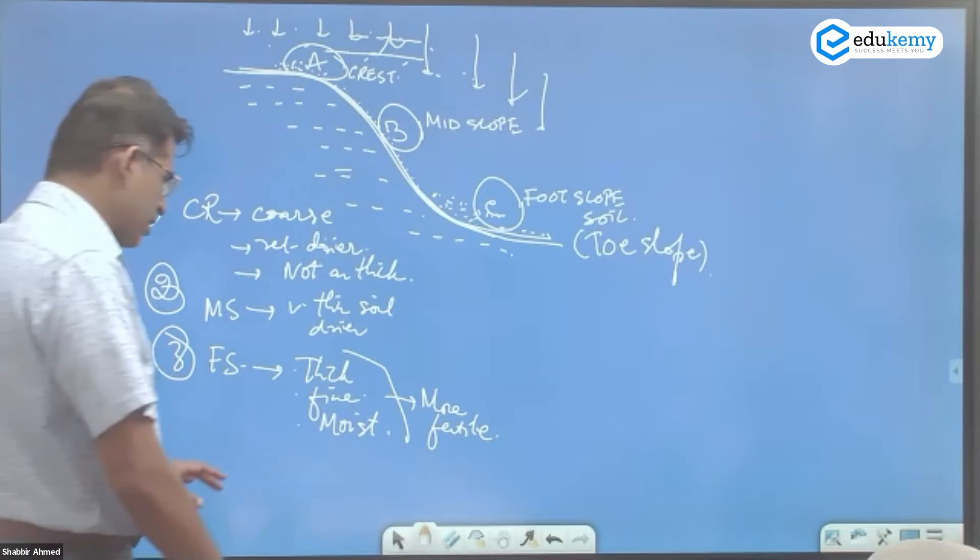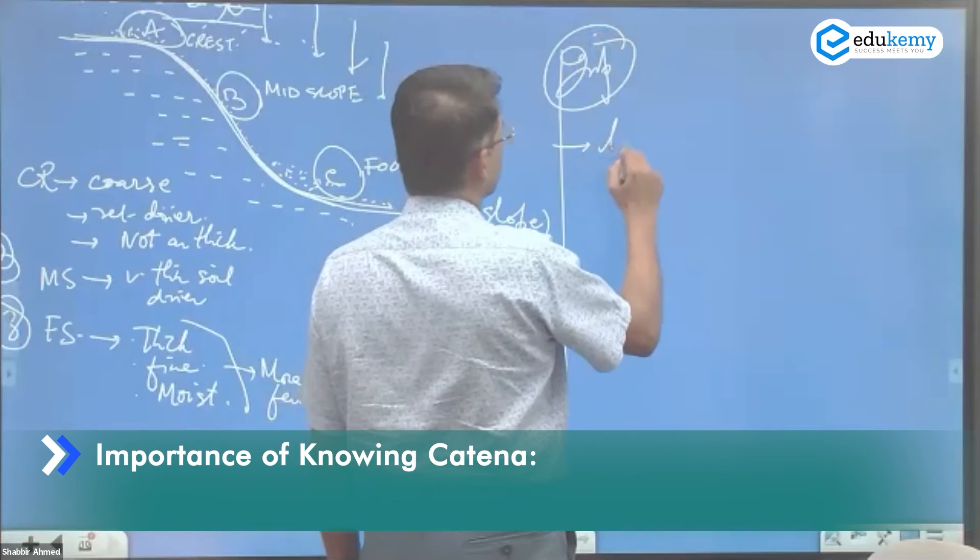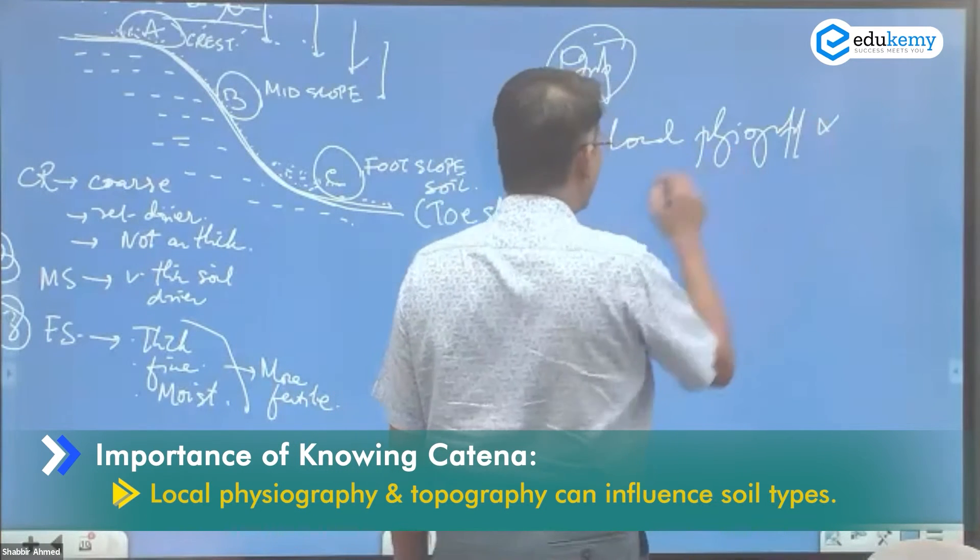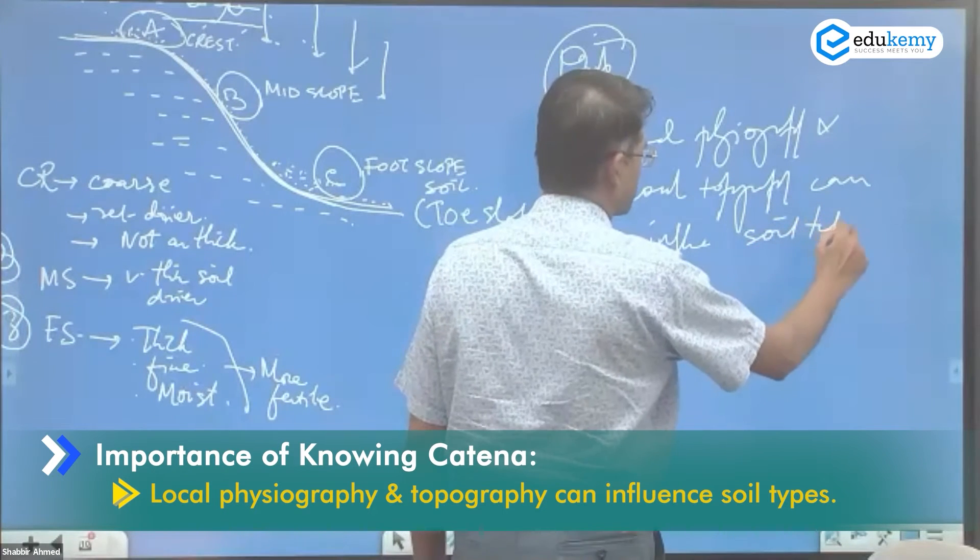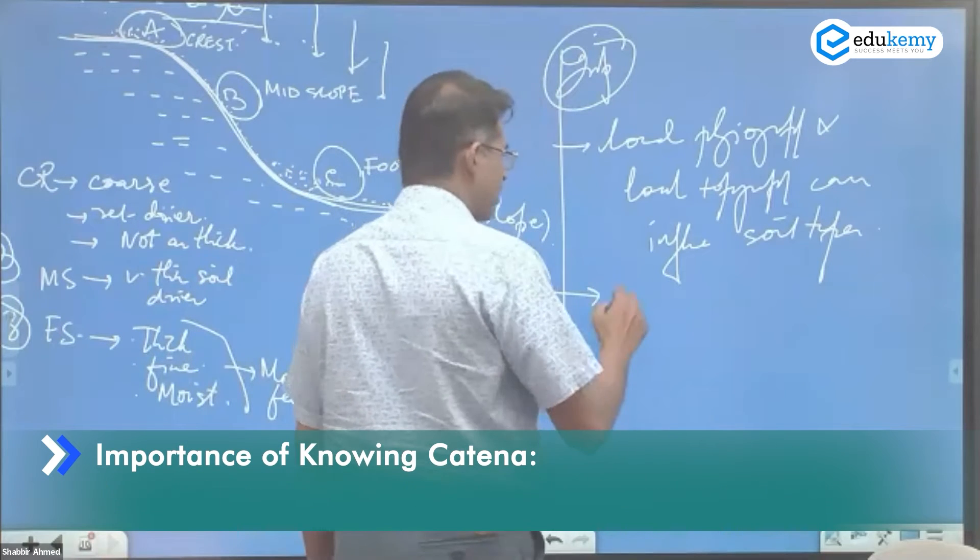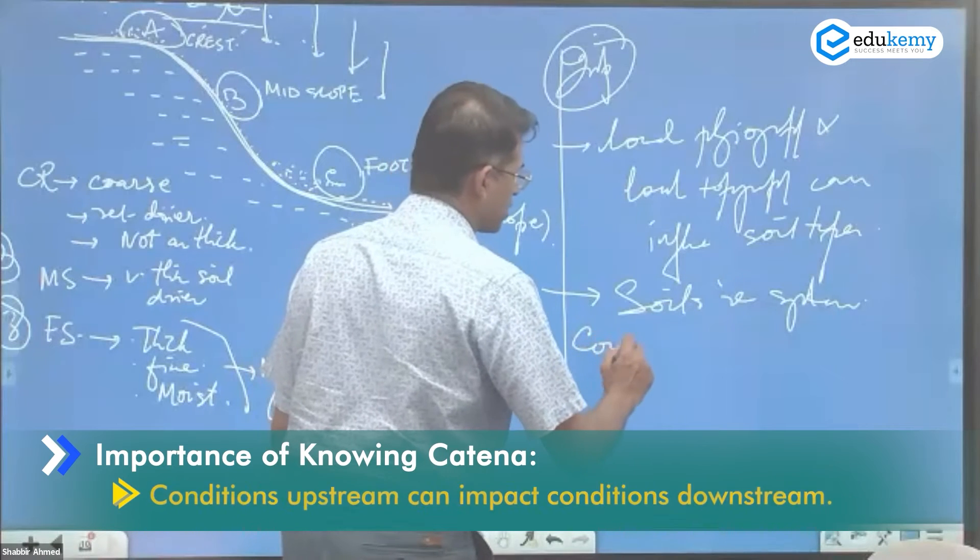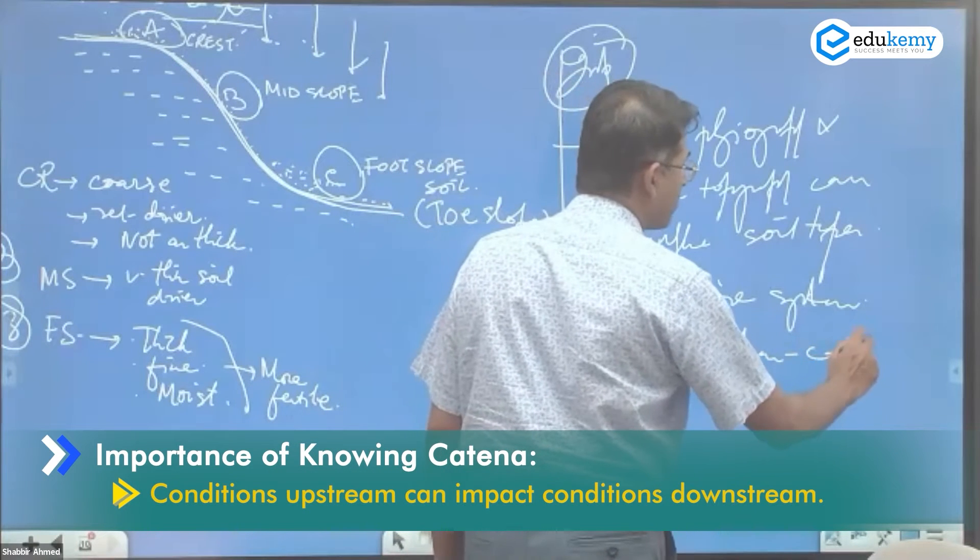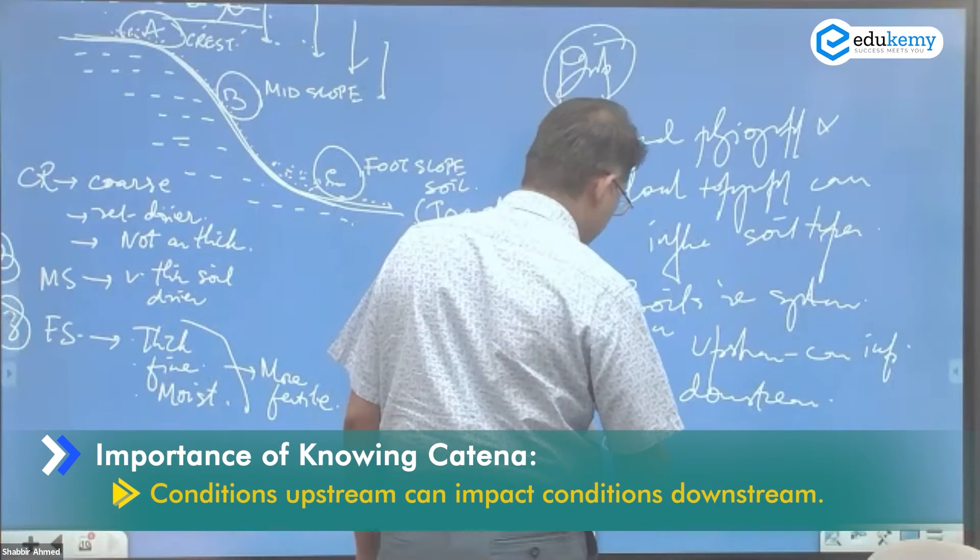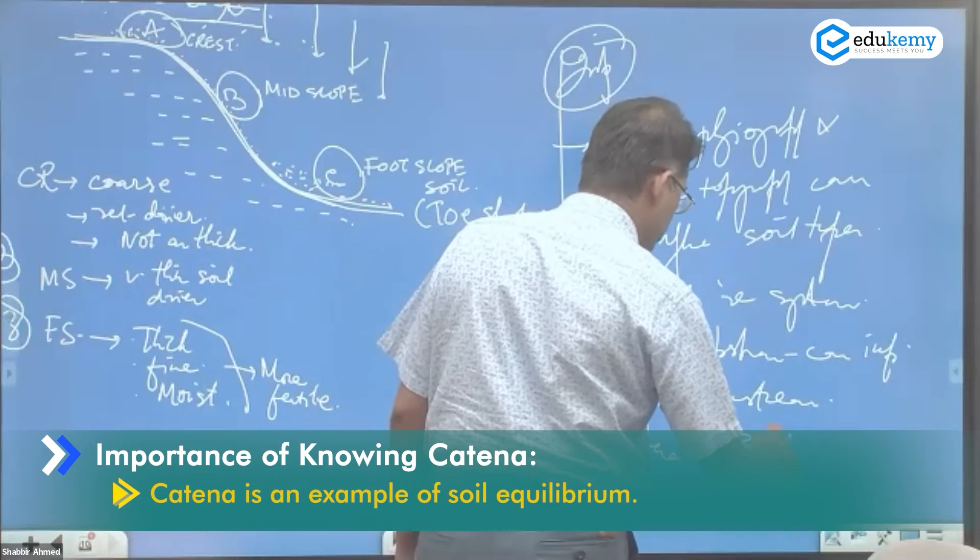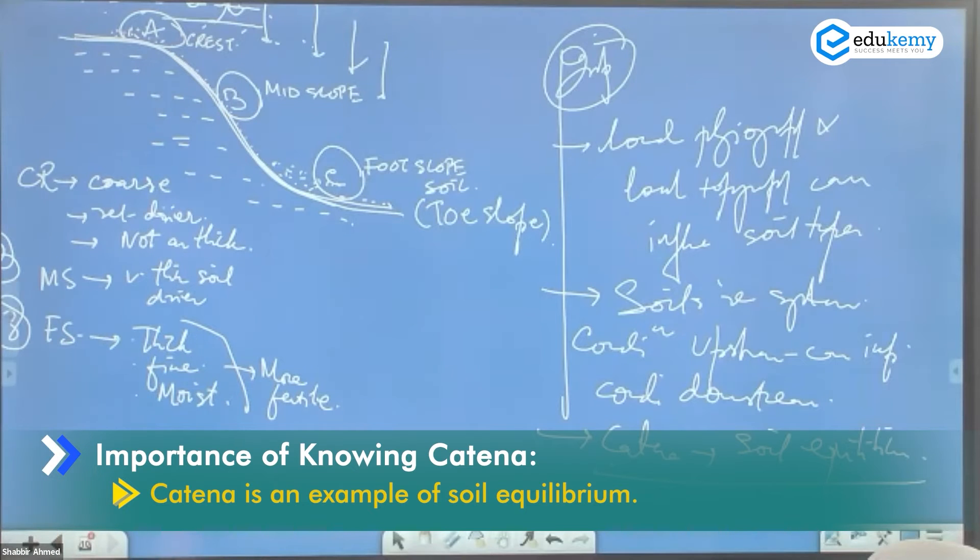Now the importance, the importance of catena is two things. It tells us that local physiography and local topography can influence soil types. It also tells us that soils are systems. The conditions upstream can impact the conditions downstream. Catena is an example of soil equilibrium.